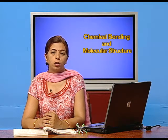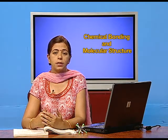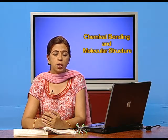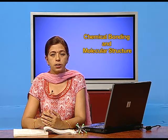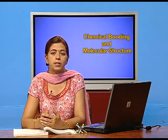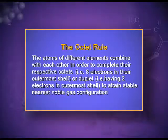Now the octet rule. From all these examples, it is clear that completing the octet is the most stable state. The noble gases have their octet complete, and all other elements enter into this most stable state. The octet rule states that atoms of different elements combine with each other in order to complete their respective octets — that is, 8 electrons in their outermost shell — or a duplet of 2 electrons, to attain the stable nearest noble gas configuration.